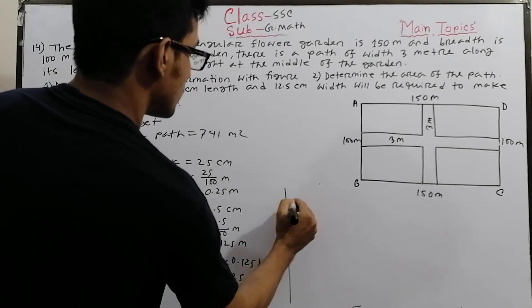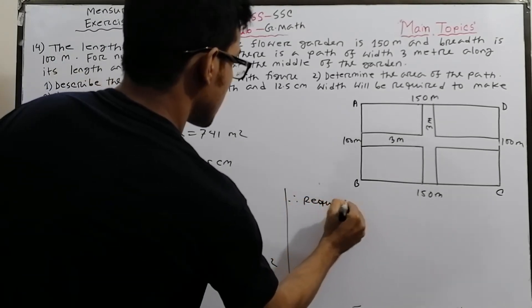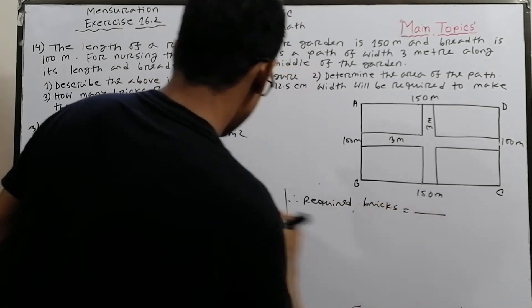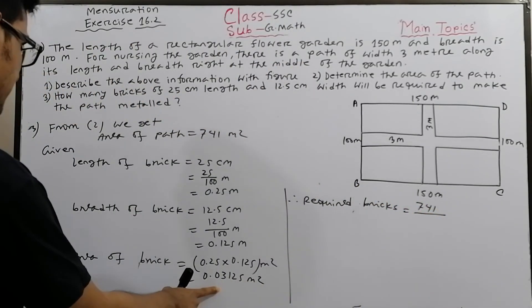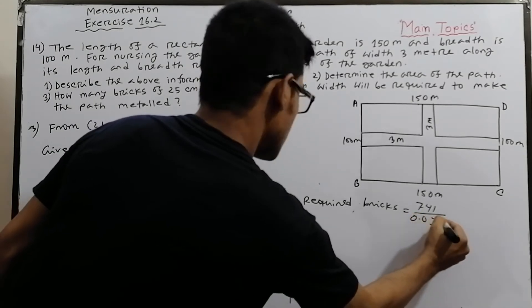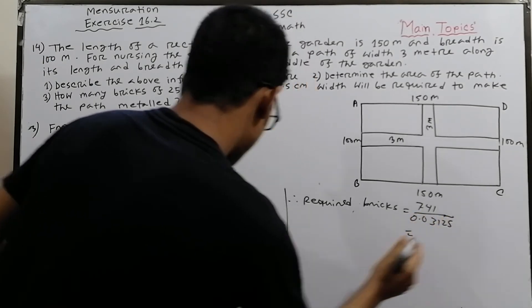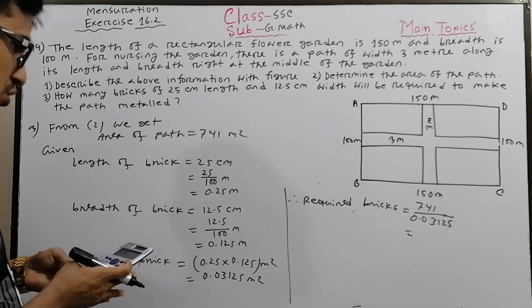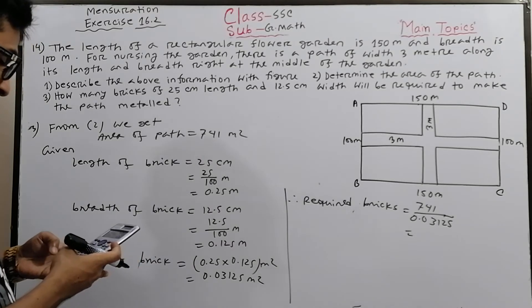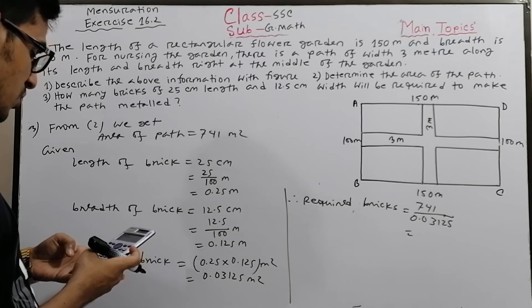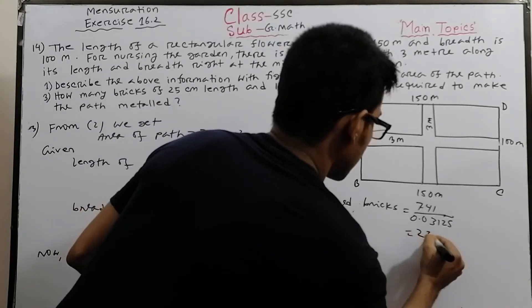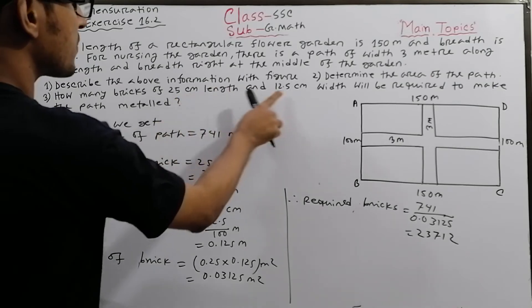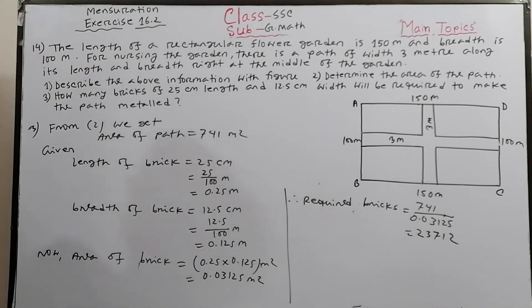Required bricks equals area of path divided by area of brick equals 741 divided by 0.03125, which gives a result of 23,712 bricks. So 23,712 bricks will be required to pave the path.